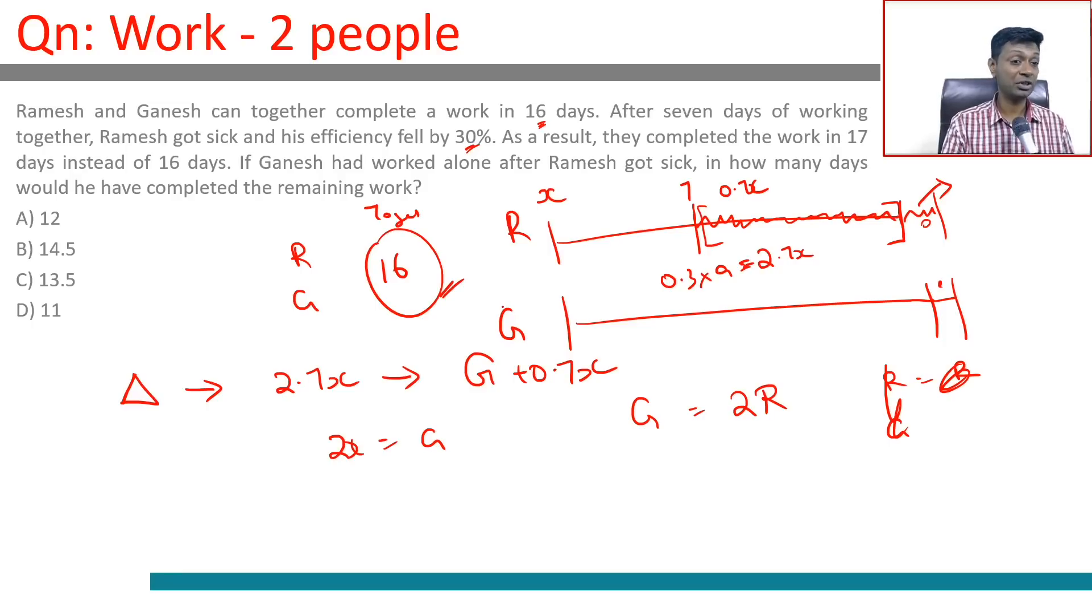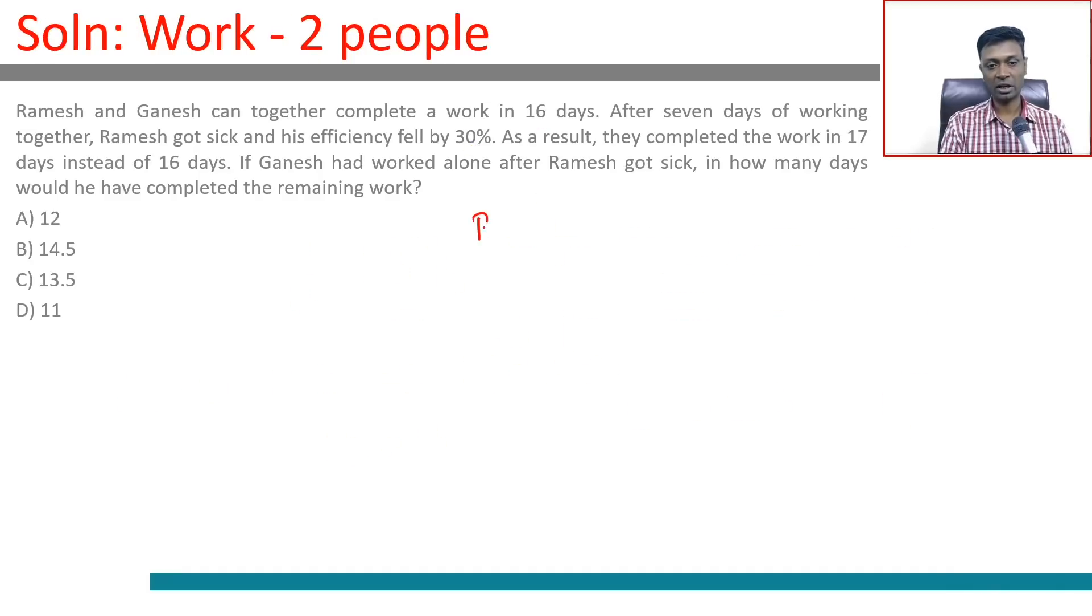If Ramesh takes k days to finish, Ganesh will take k by 2 days to finish. 1 by k plus 2 by k equals 1 by 16. 3 by k is 1 by 16, so k is 48. Ramesh can finish the task in 48 days, Ganesh can finish it in 24 days.